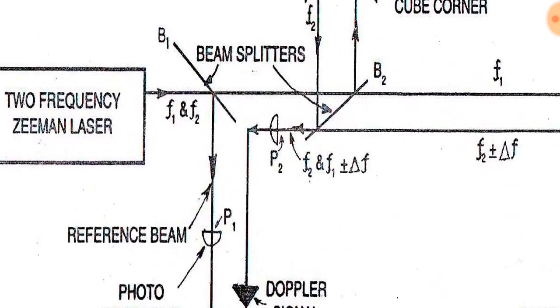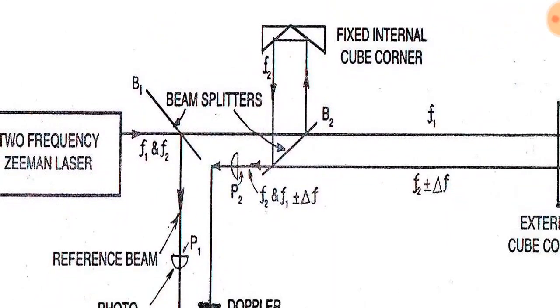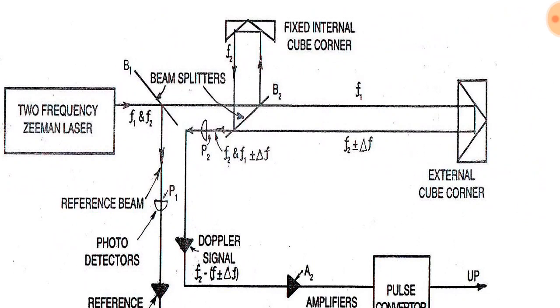This diagram shows f1 and f2 frequencies coming and falling on the beam splitter. The beam is split to P1 and the external cube corner, then reflected back as f1.